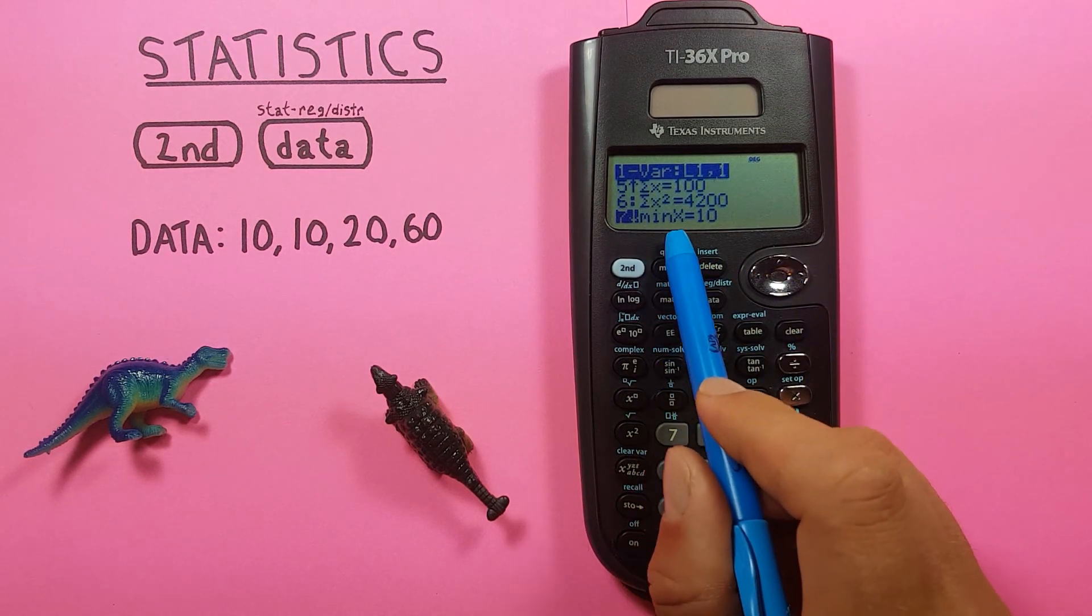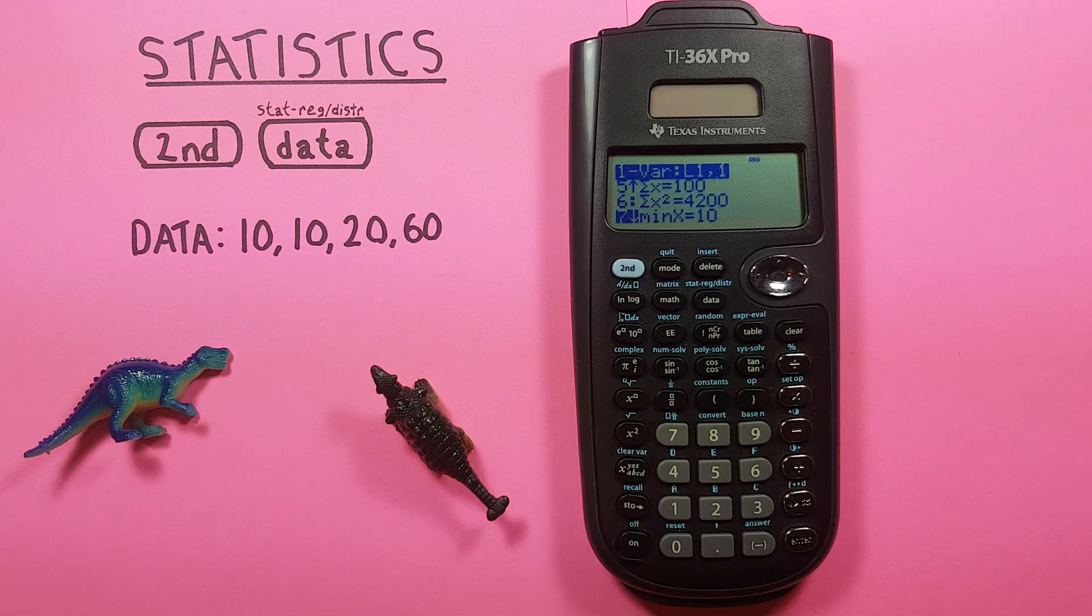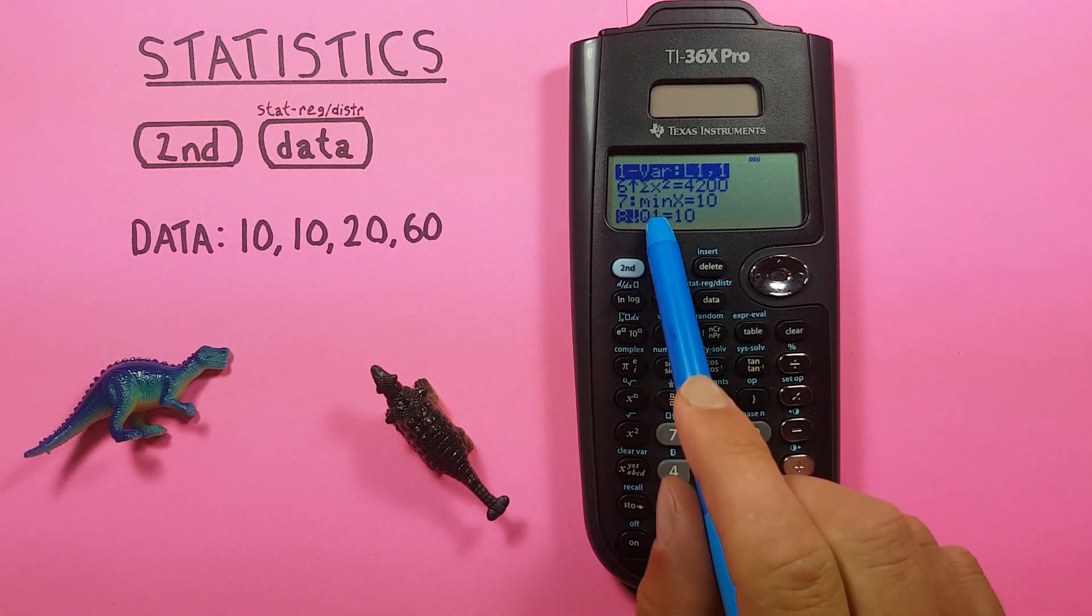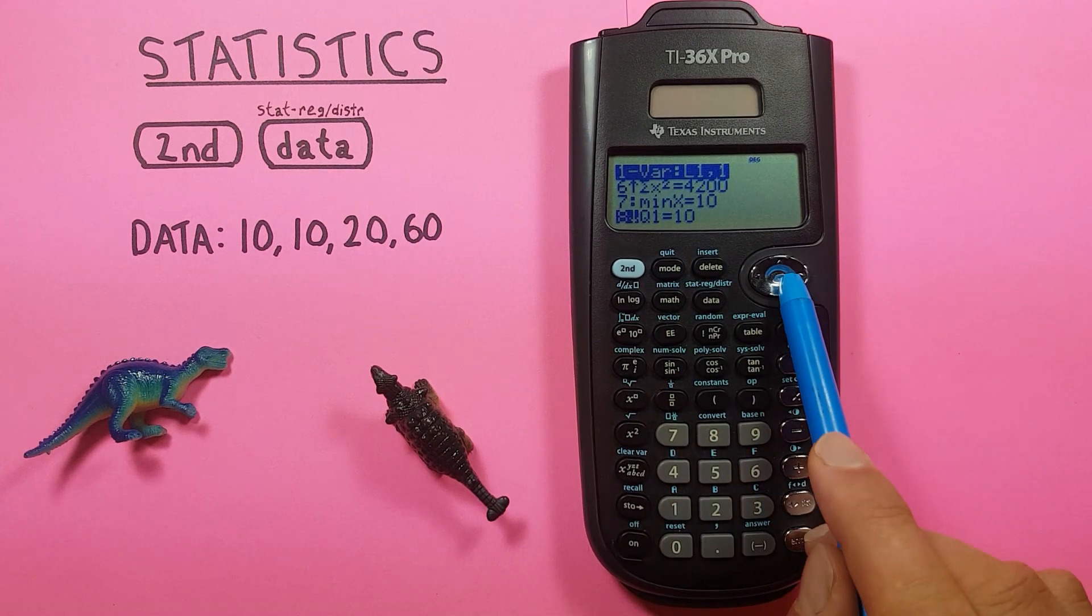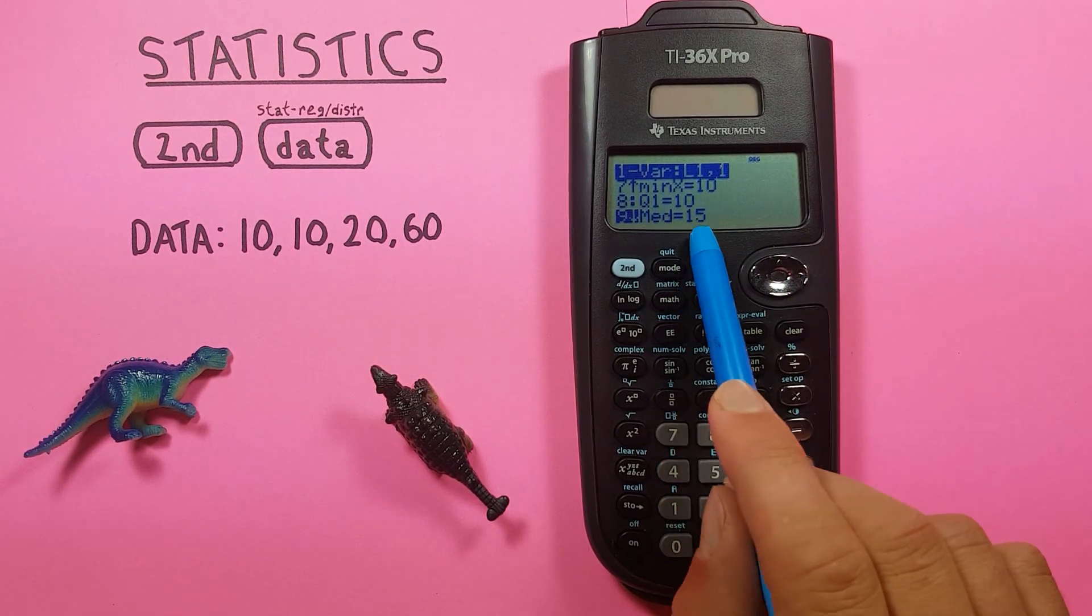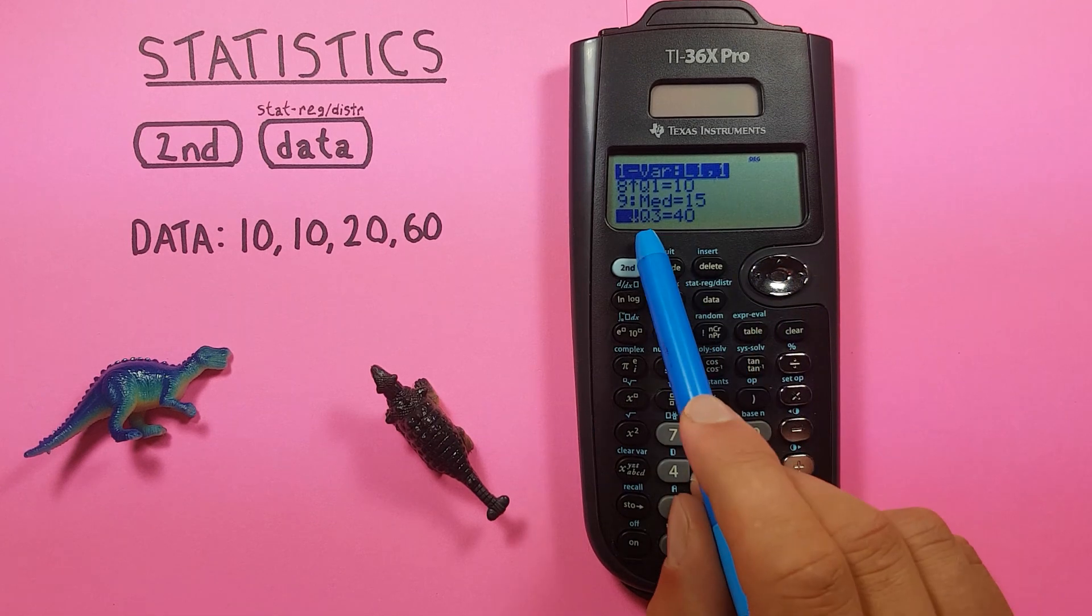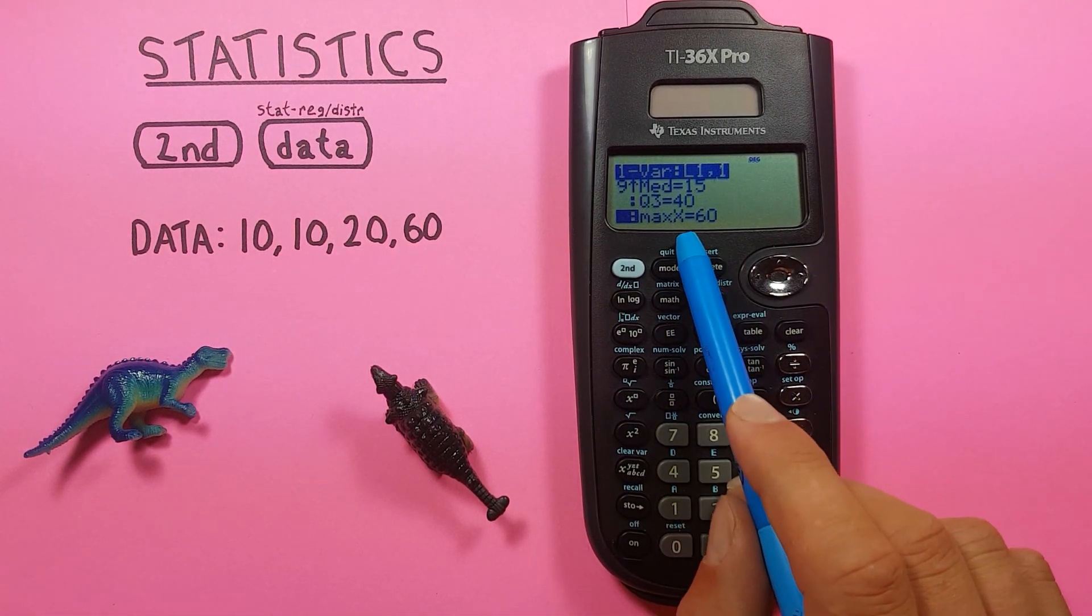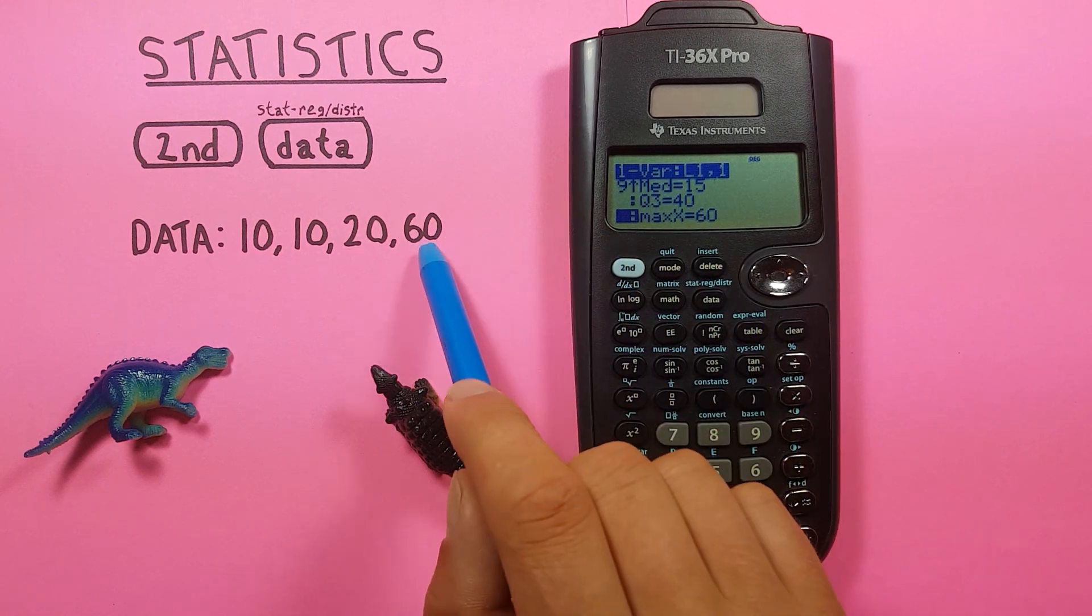A minimum value of 10, yep. A first quartile of 10, a median of 15, a third quartile of 40, and finally a maximum value of 60, which makes sense as well.